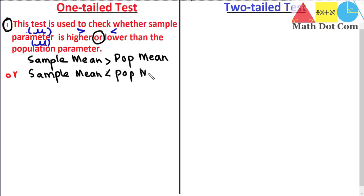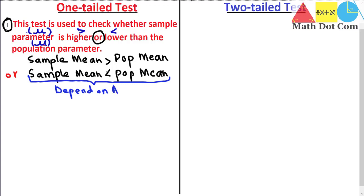It depends on your alternative hypothesis — how you make this decision depends on what you are trying to prove. I have discussed null and alternative hypotheses in detail in my previous lecture, so please look into that. A one-tailed test will tell you whether there is a difference between the sample mean and the population mean in only one direction — either the sample mean is greater than the population mean, or the sample mean is less than the population mean.